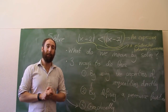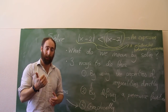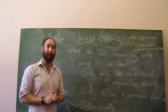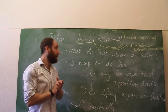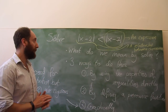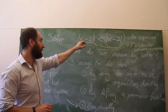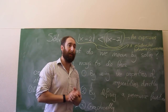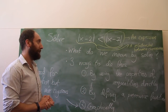The particular problem I'm going to talk about is an inequality, and it includes absolute value — two of the things that you've been studying already. The problem we want to look at is to solve this inequality: the absolute value of x minus 2 is less than the absolute value of x minus 7.